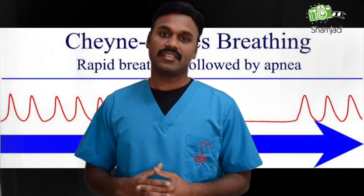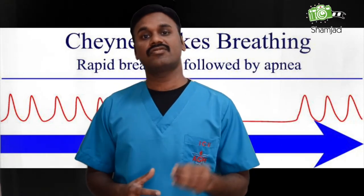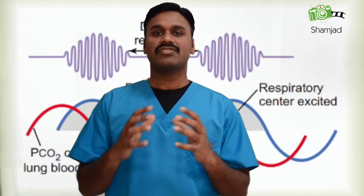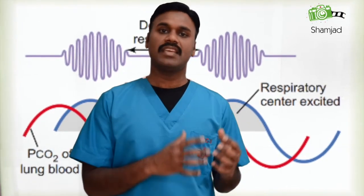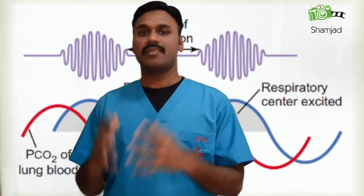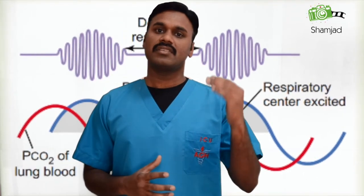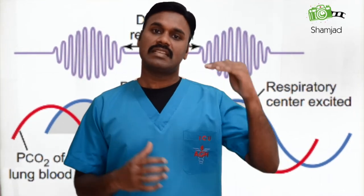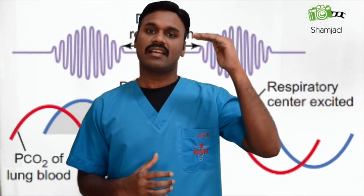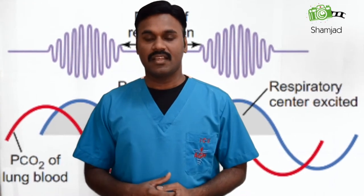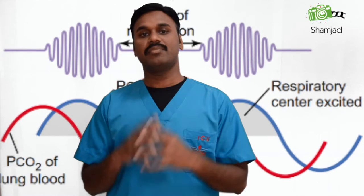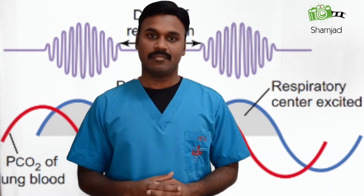This pattern repeats. The patient might take 30 seconds to 2 minutes for each cycle. It is an oscillation of ventilation between apnea and hyperpnea. Apnea means temporary suspension of breathing and hyperpnea means increased rate and depth of breathing. This is associated with PCO2 and PO2 changes in the blood.